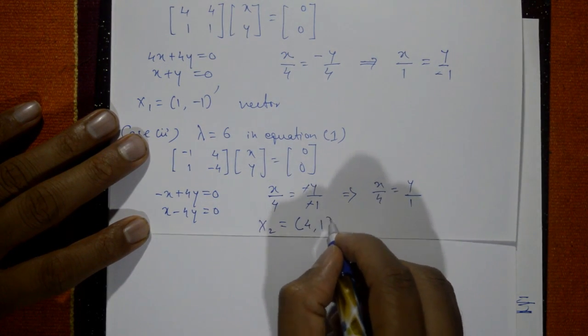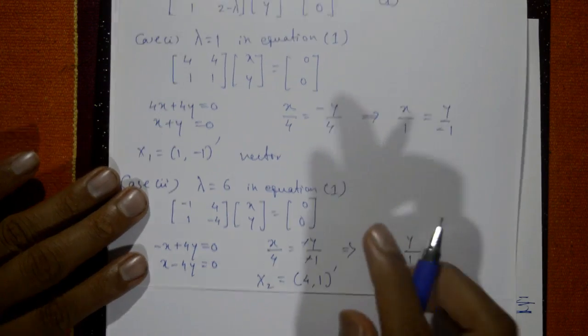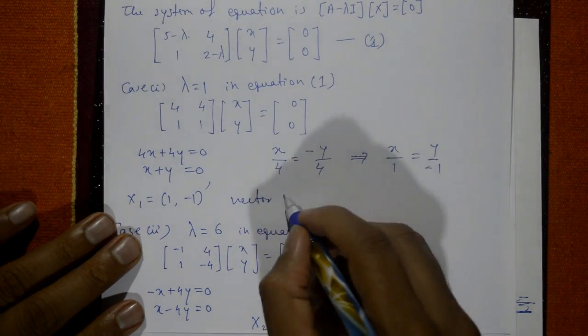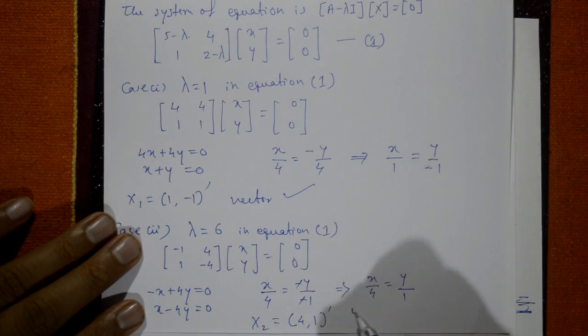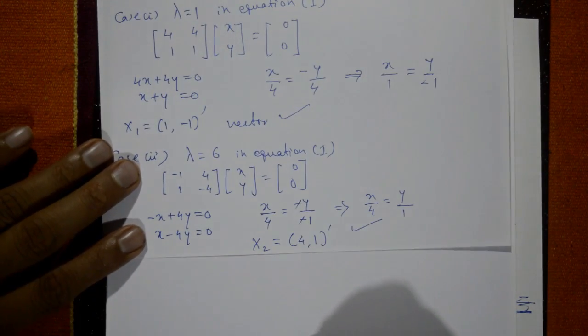The second eigenvector is the column vector [4, 1]. These are the required first and second eigenvectors.